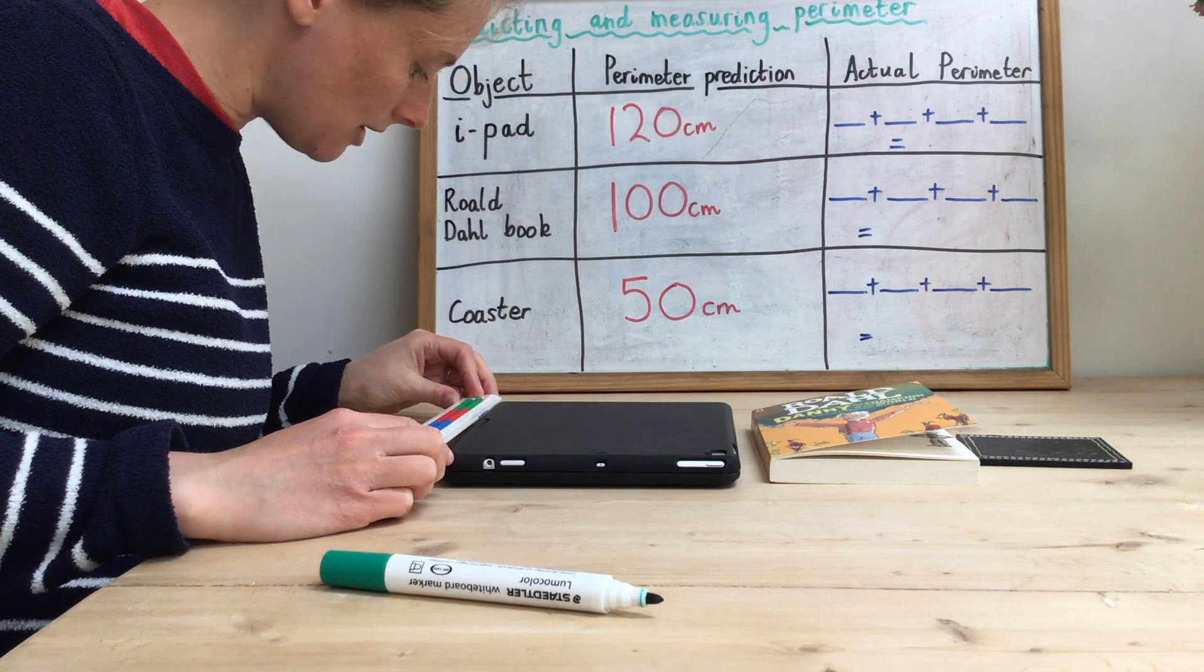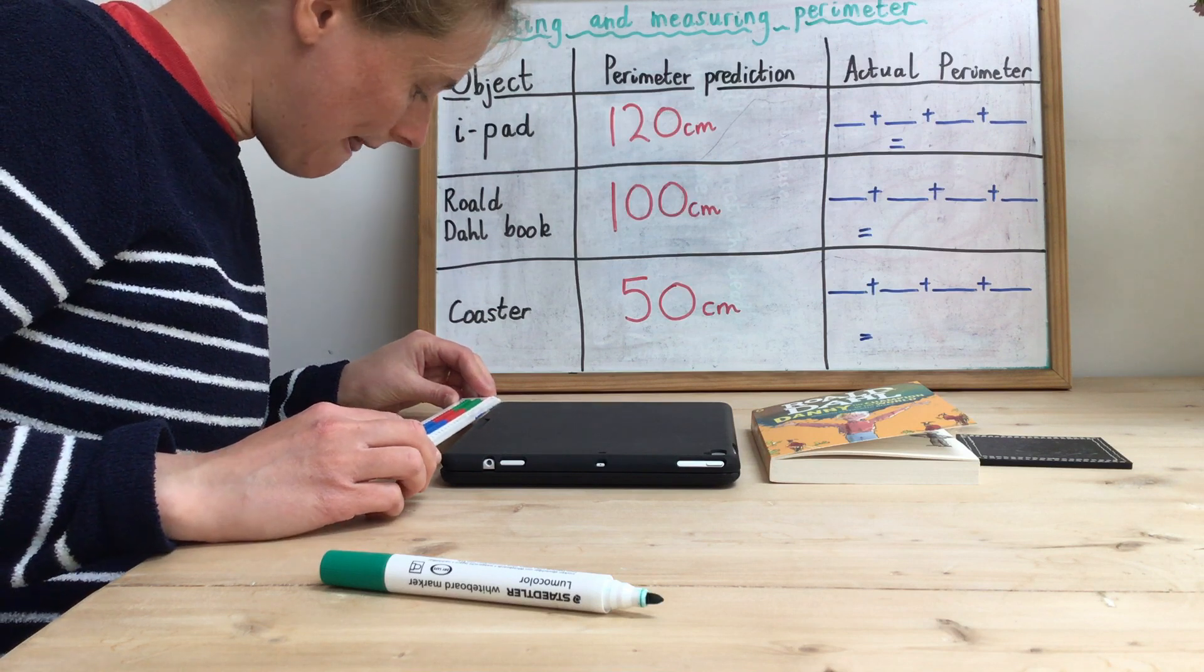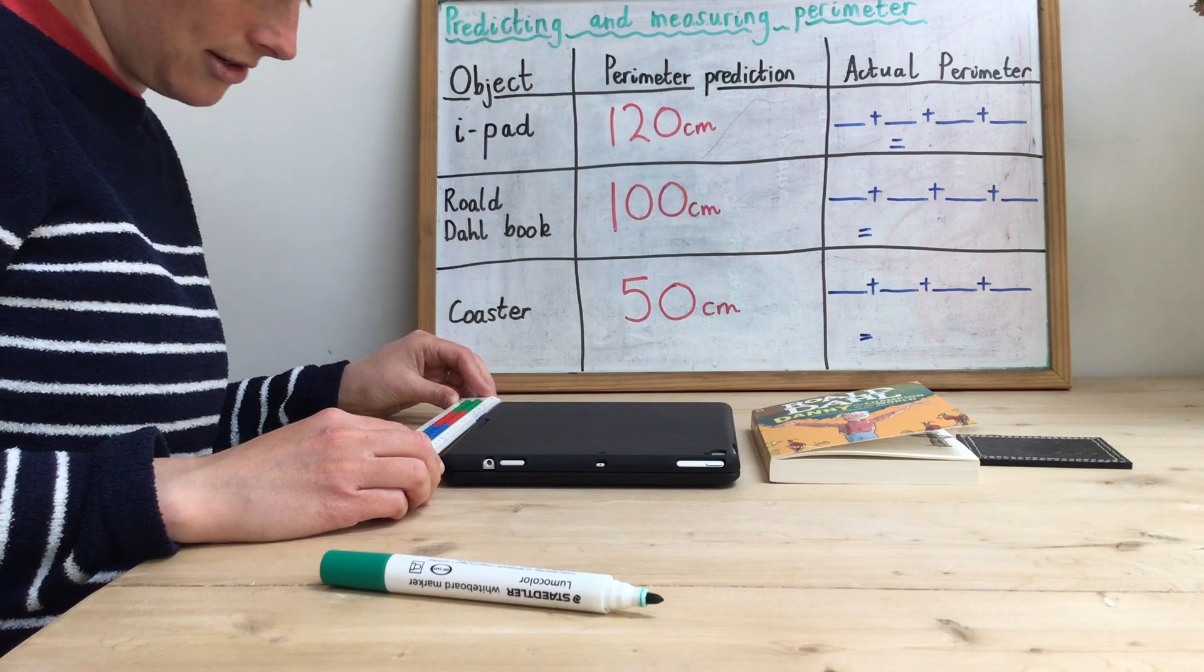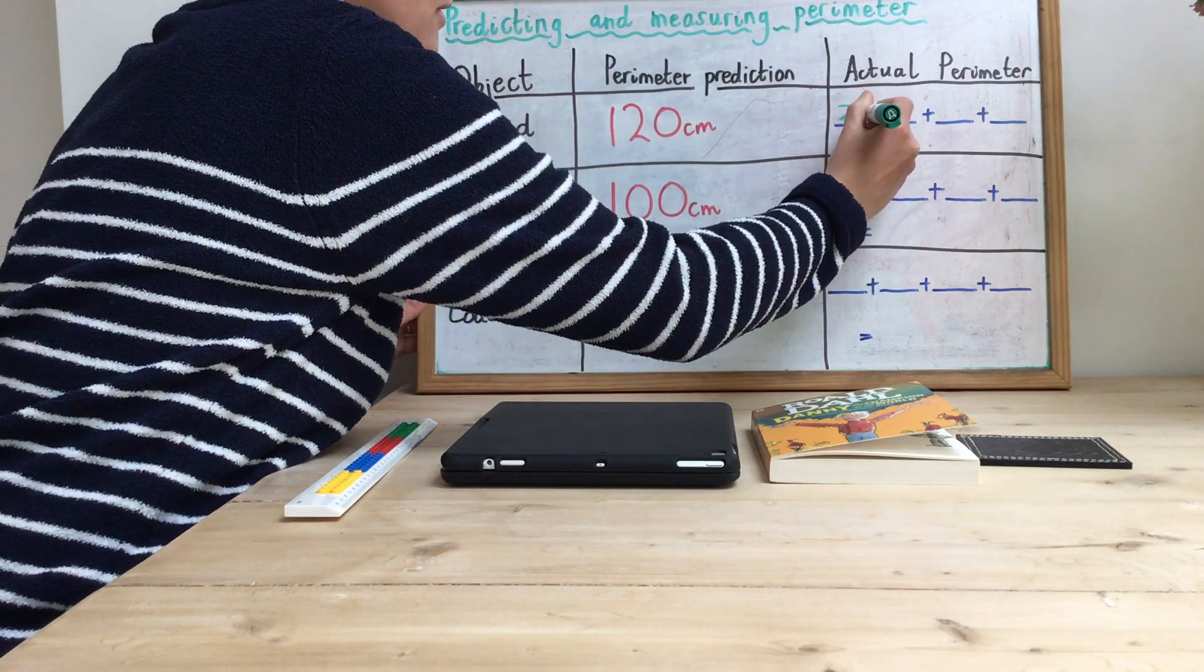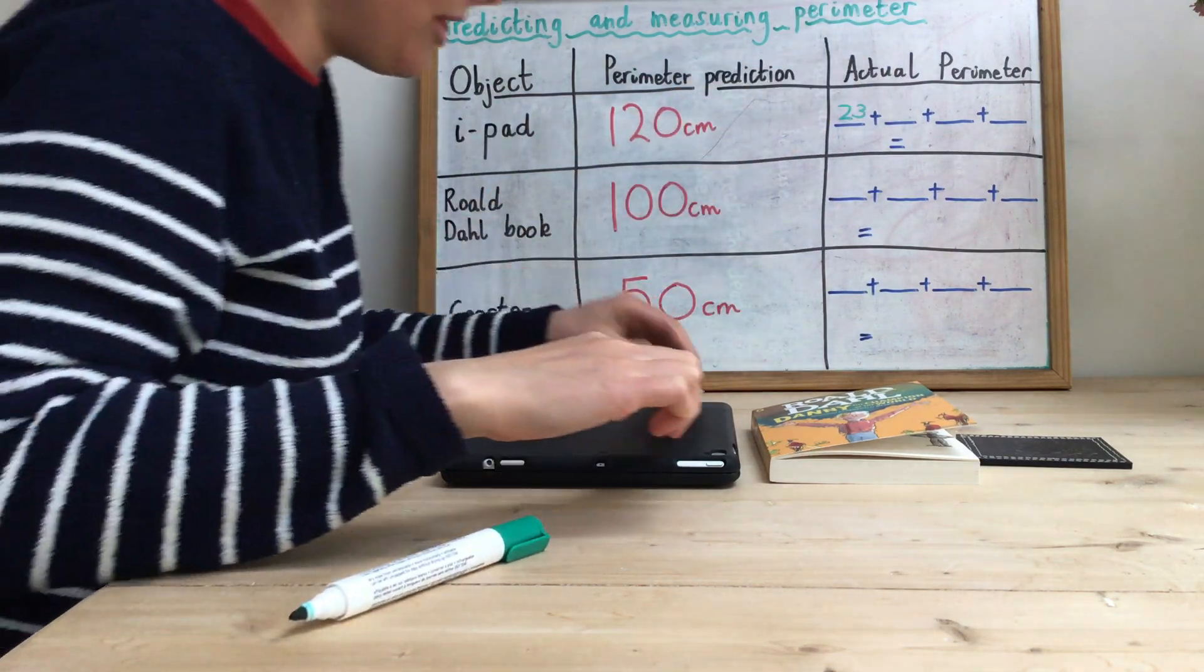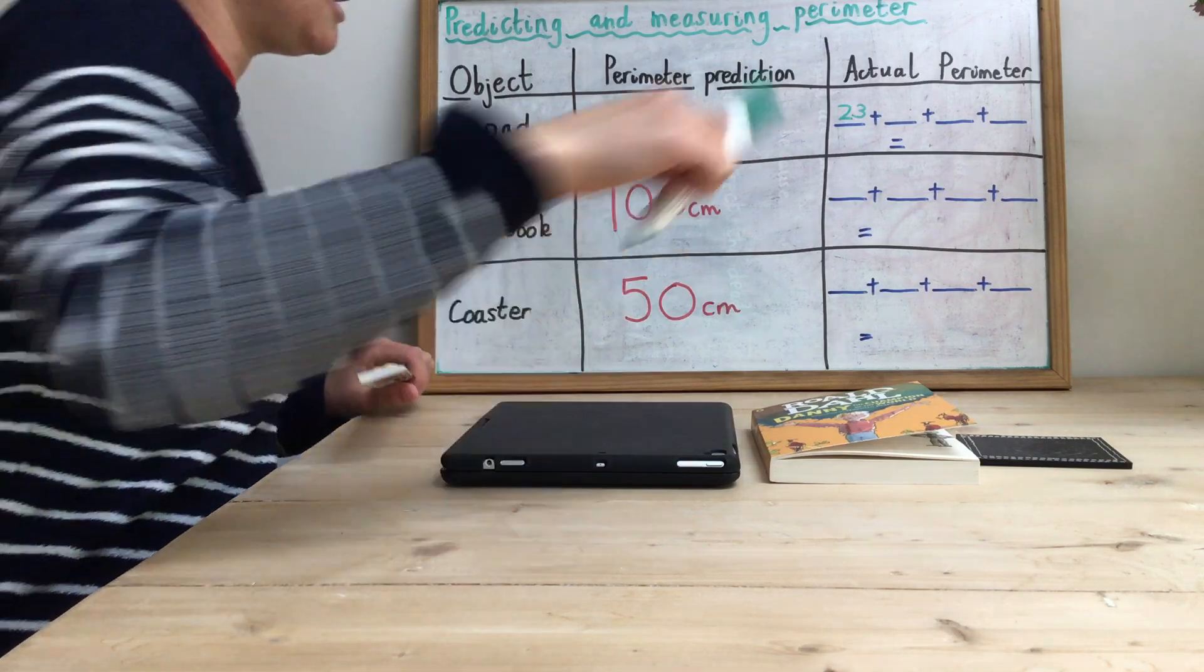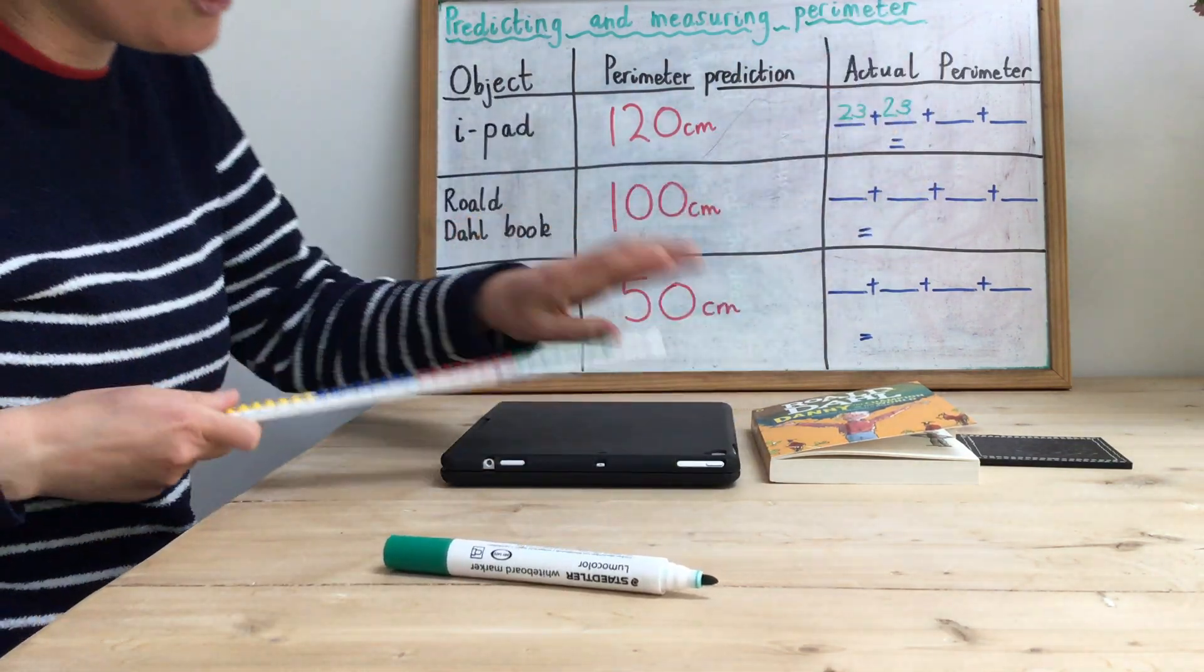So if I measure this long edge and I'm making sure I line things up with zero, I've got 23 centimeters long that side. That also means that this side will also be 23 centimeters.